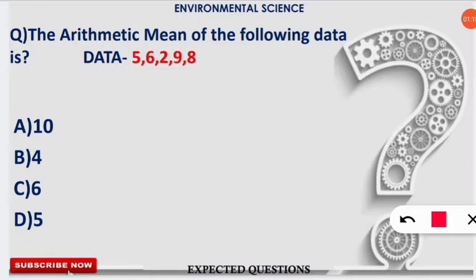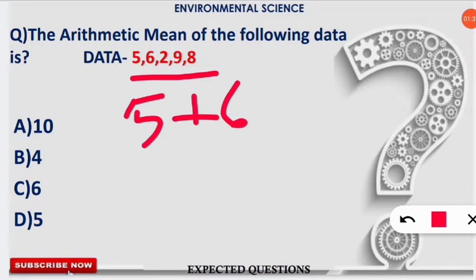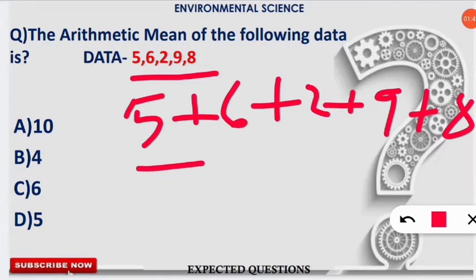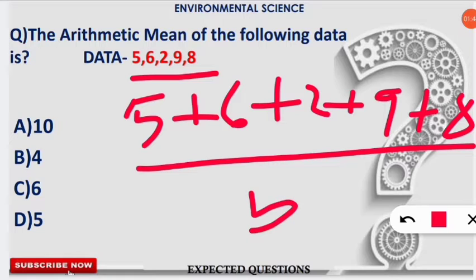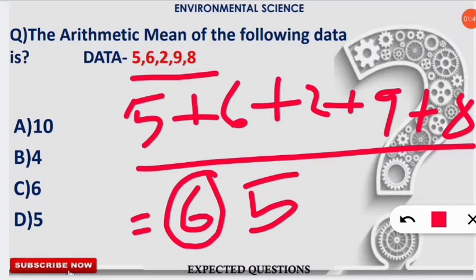The first question: find the arithmetic mean of the following data. The simple approach is to take the sum of all given values divided by the number of values. So we add 5 + 6 + 2 + 9 + 8, then divide by 5 (the number of items), and we get the answer as 6. Calculate on your own and check — the correct option is C.